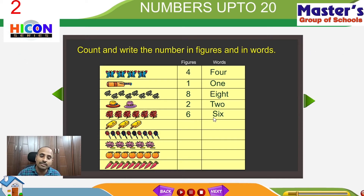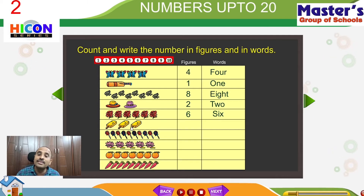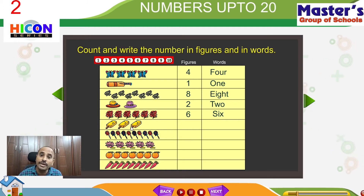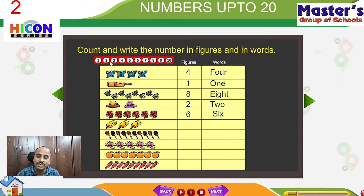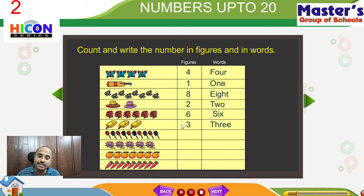See the next set of pictures. The next set contains ice fruits — mango bars, which we can eat on hot summer days. How many mango bars are there? Let us count: 1, 2, 3. There are 3 ice fruits. The number 3 can be written in figures like this, and in words: T, H, R, E, E — three.